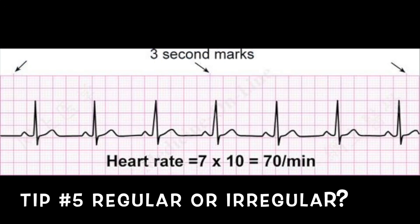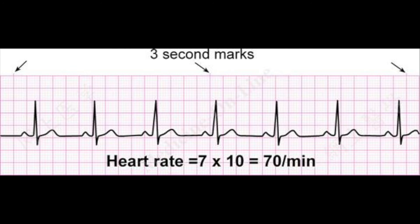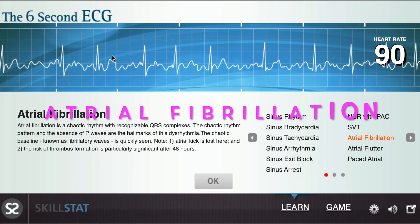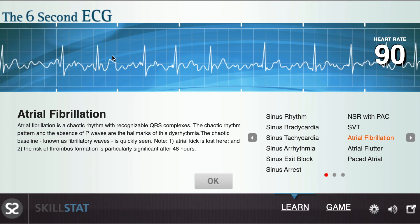A final tip I wanted to share was how to determine if a rhythm is regular versus irregular. The easiest way is by paying close attention to the distance from one P-wave to another P-wave, or from one R-wave to another R-wave. In this picture, you can see that the distance from one P-wave to another P-wave is about equivalent throughout the entire strip. Here is an example of an irregular rhythm — atrial fibrillation. As the description explains, it is a chaotic rhythm with recognizable QRS complexes, but absent, unrecognizable P-waves. Since we can't even determine the distance from one P-wave to another P-wave, this is an irregular rhythm.